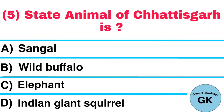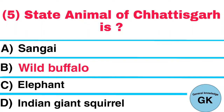Question Number 5. State Animal of Chhattisgarh is: A. Sangee, B. Wild Buffalo, C. Elephant, D. Indian Giant Squirrel. Answer: Wild Buffalo.